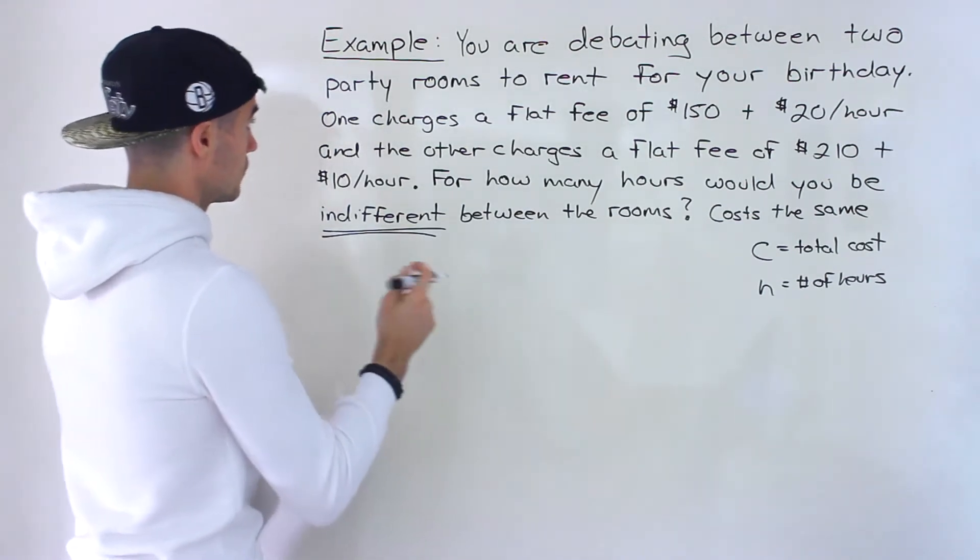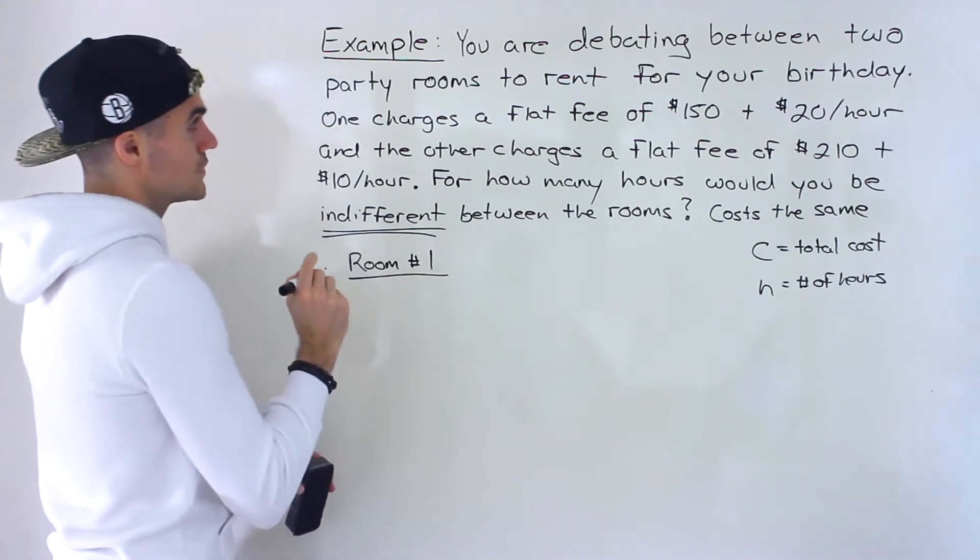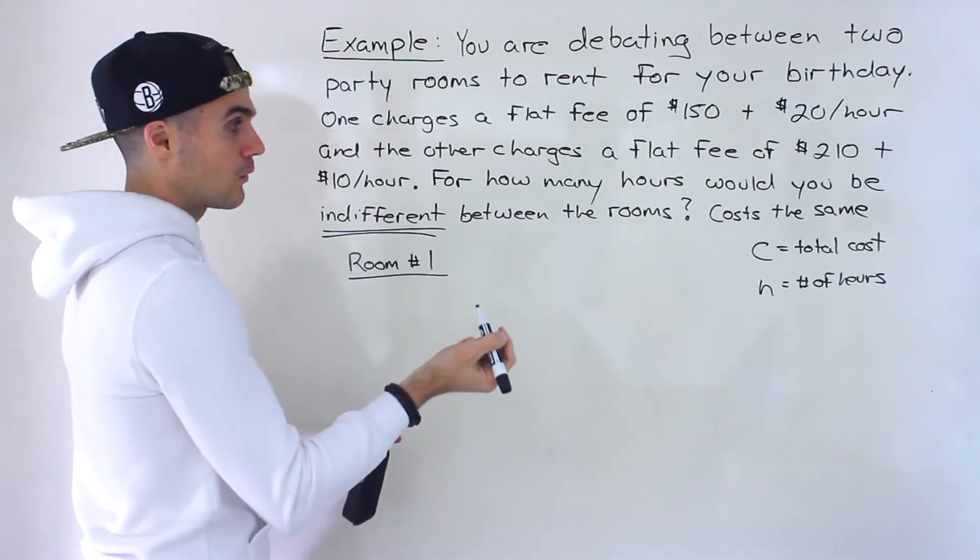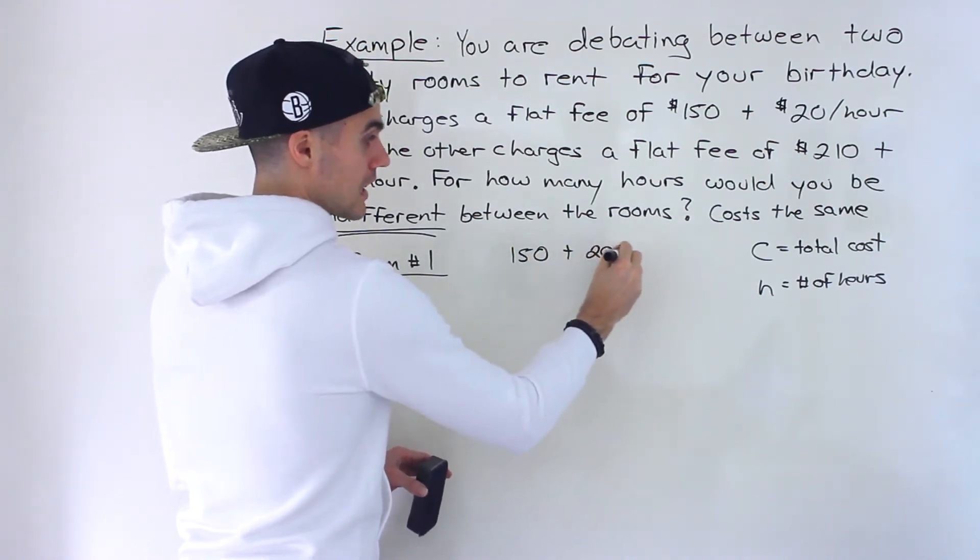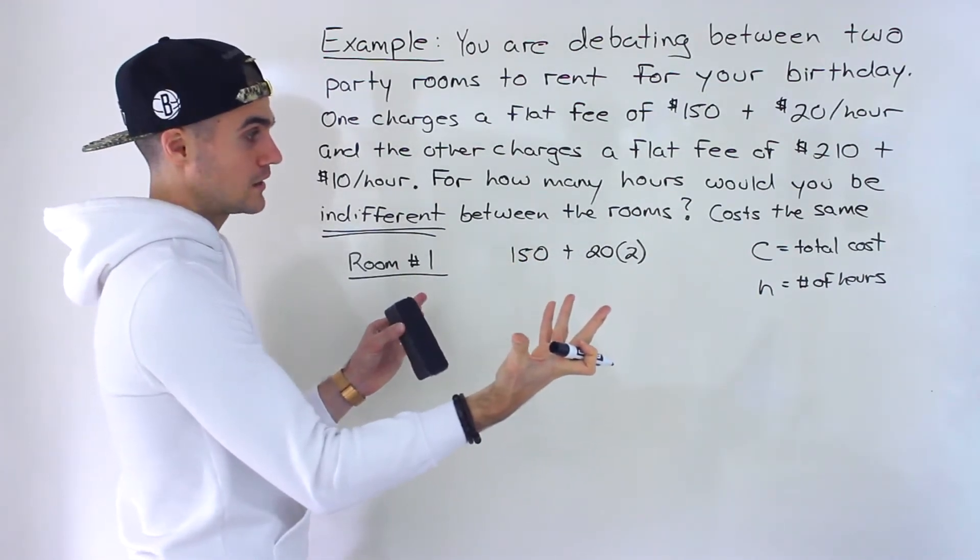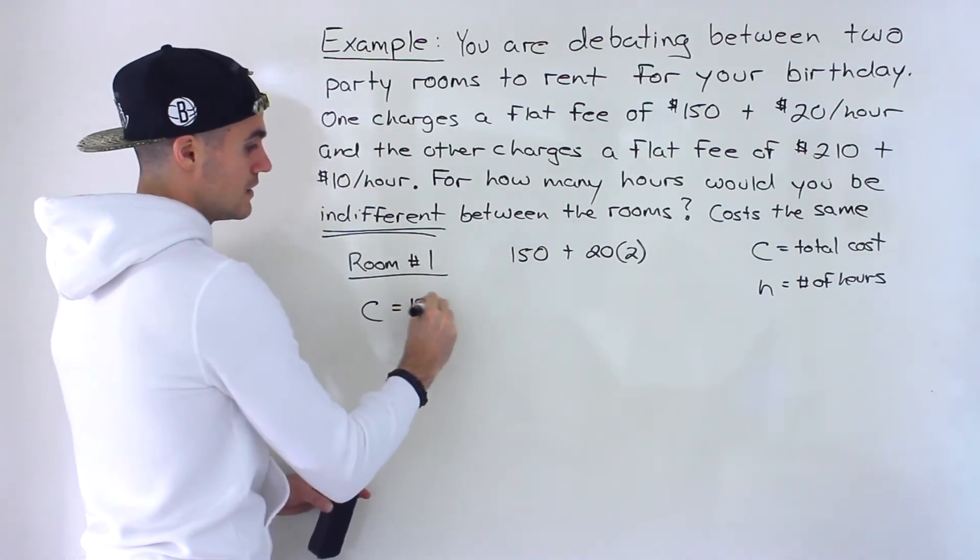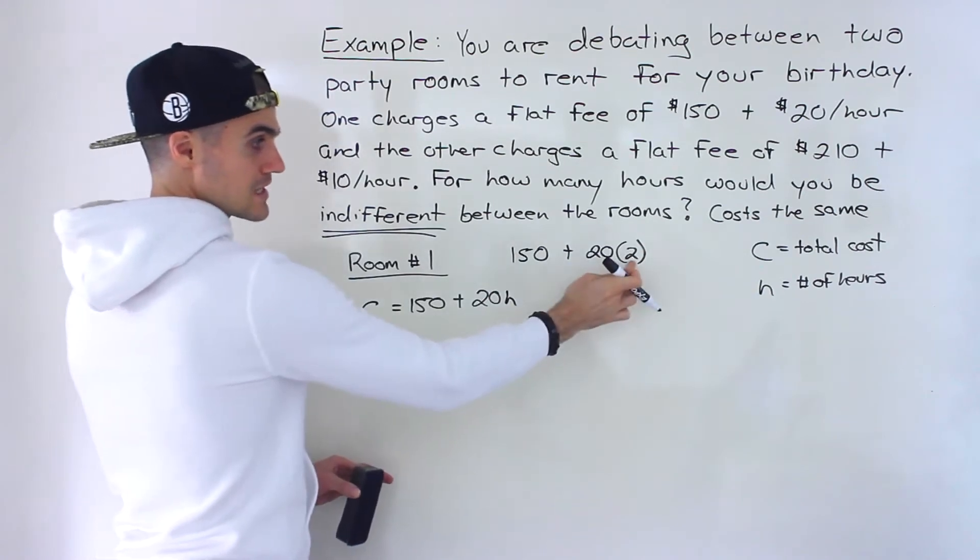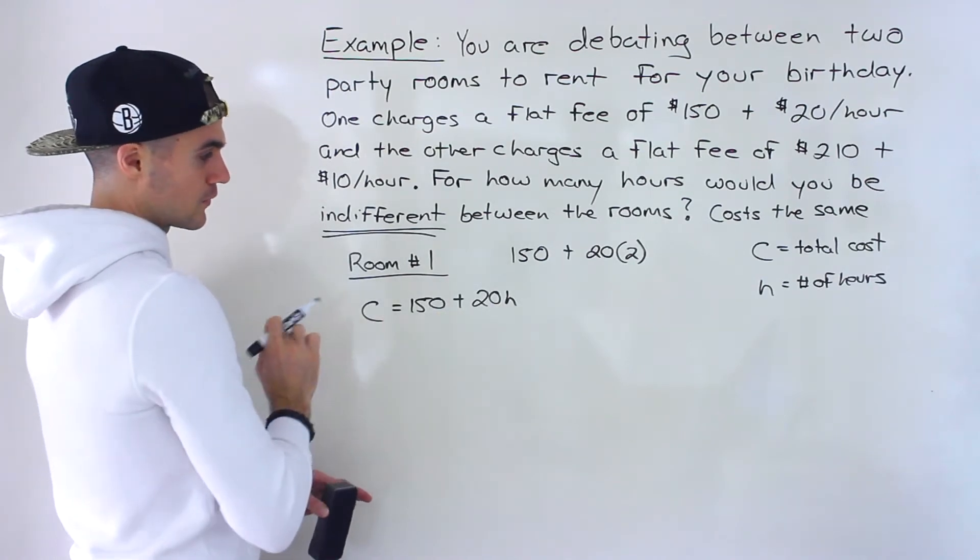Notice there's two party rooms. Let's work with room number one. Let's create an equation for it. So it charges a flat fee of $150 plus $20 per hour. So let's say you rent it out for two hours. You would pay $150 plus 20 times 2, which would be $150 plus $40, which would be a total cost of $190. So the $150 you're always going to be paying. So the c, the cost is going to be $150 plus 20 times the number of hours that you rent it for, 20h. This is the general formula here for room number one.